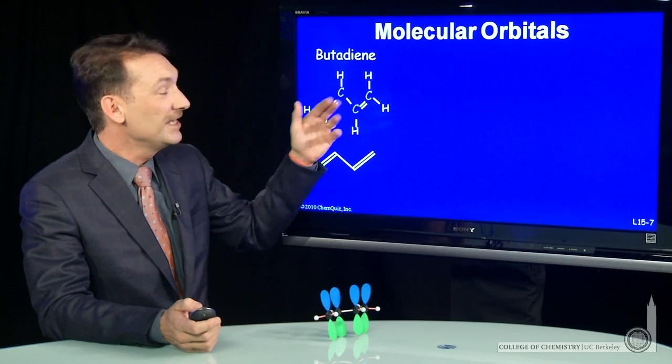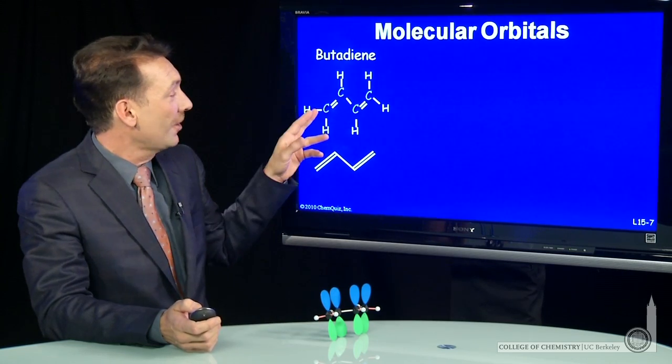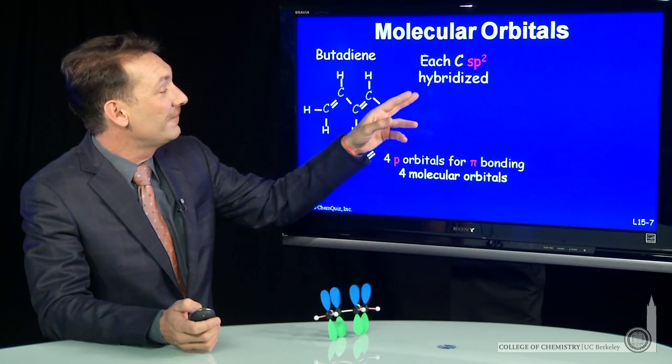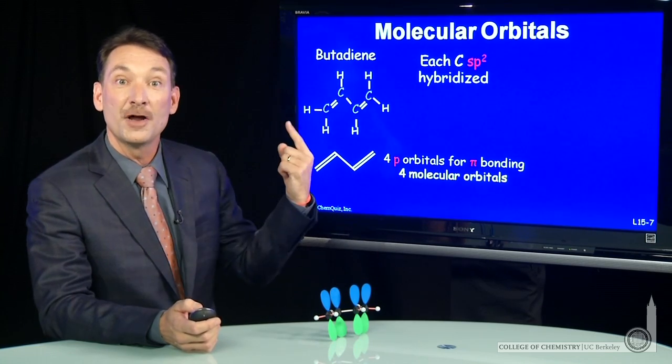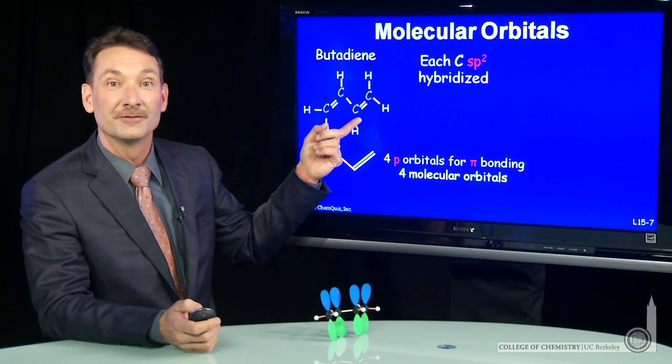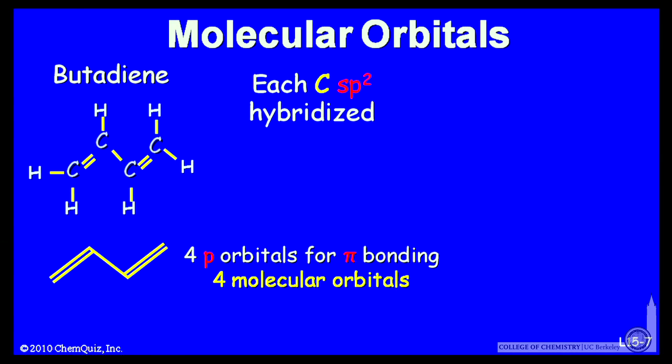But with these sp2 hybridized carbons, we'll have p orbitals left over on each carbon. If I sp2 hybridize, there's one p orbital on each of these carbon atoms. So those four p orbitals, one on each carbon, can overlap to form pi bonds.